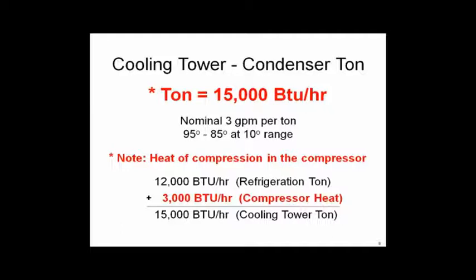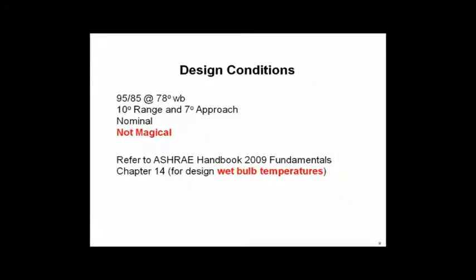Let's talk about standard conditions for CTI. The standard condition is: range of 85/95°F — making 85-degree water with 95-degree water returning from the condensers — a 10-degree range, done at a 7-degree approach at 78-degree wet bulb. The normal statement is 85, 95, 10-degree range, 78-degree wet bulb. That's a 7-degree approach to the 85-degree condenser water I'm making. This works out to 3 GPM per ton with a 15,000 BTU/hr ton. This all comes from ASHRAE, where you find conditions for your specific location.